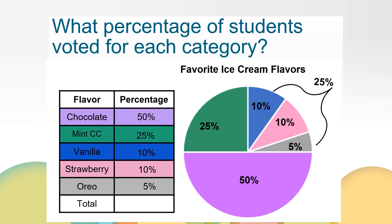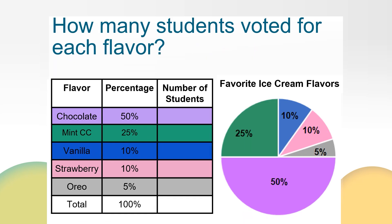We know the percentage that represents each category. However, we still don't know how many students voted for each category. Let's try to figure that out. We know that chocolate represents 50% of the circle graph and 50% of the students surveyed voted for chocolate. If 200 students were surveyed, I can break the graph into two equal pieces: one half of 200, or 200 divided by 2, is equal to 100. So 100 students voted for chocolate.